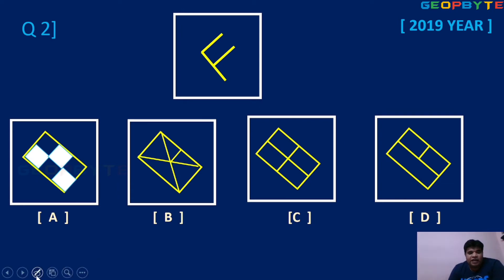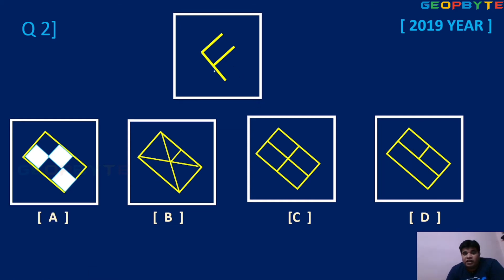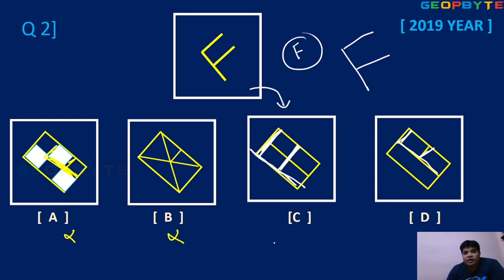Second question: the shape is F. Where is the F shape existing? You need to consider the length also — some options look like a small F, which is not satisfied. In option A, the diagram shows a small F, so not satisfied. In option B, easily you can identify — not satisfied. In option C, look at the white color — it is existing here. In option D, a small F is possible but based on the figure, it exactly exists in option C only. So option C is the right answer.